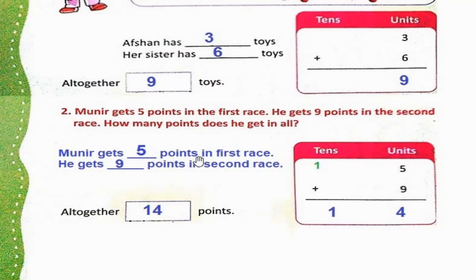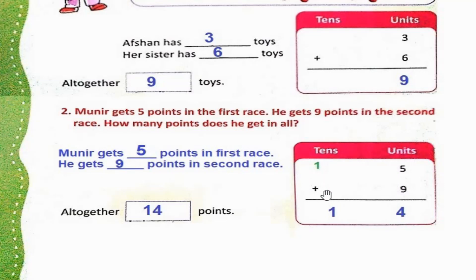Munir gets 5 points in the first race and 9 points in the second race. So for the total, we do 5 plus 9, which is 14. So 4 in the unit place and 1 carry forward. 1 plus nothing is 1. So the total is 14.